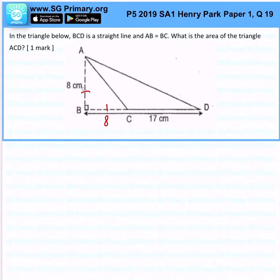First of all, since we know that AB is equal to BC, the first thing we want to find is CD, which would be 17cm minus 8cm, which is 9cm.